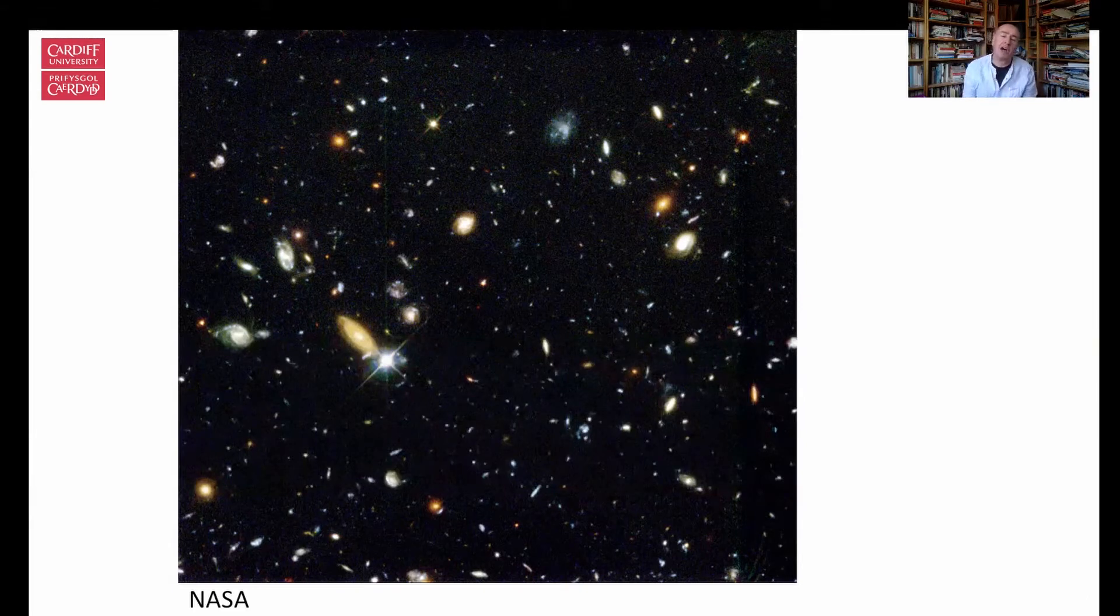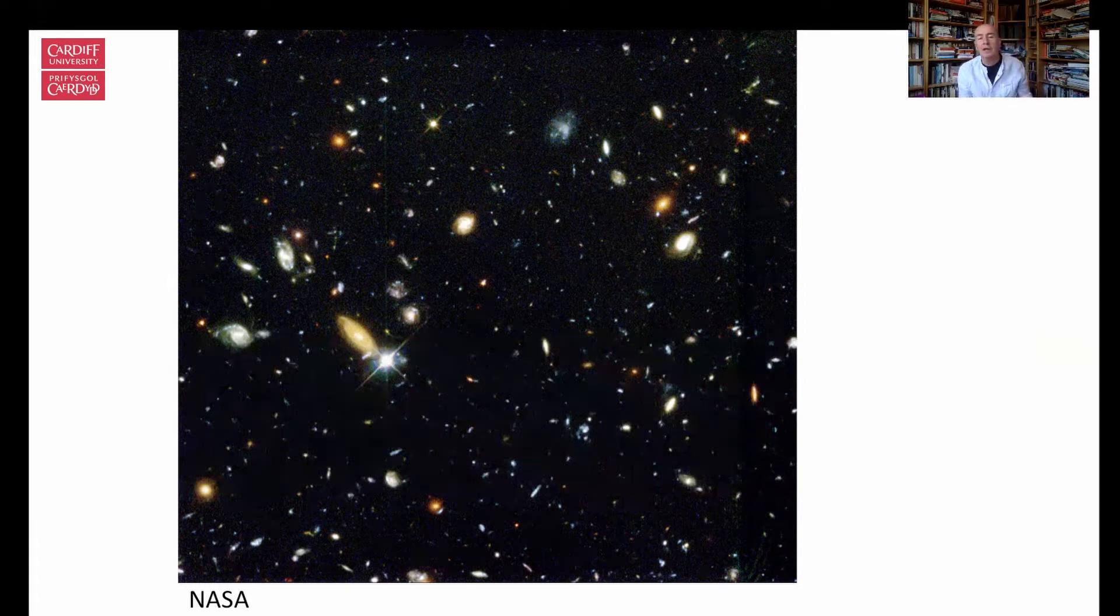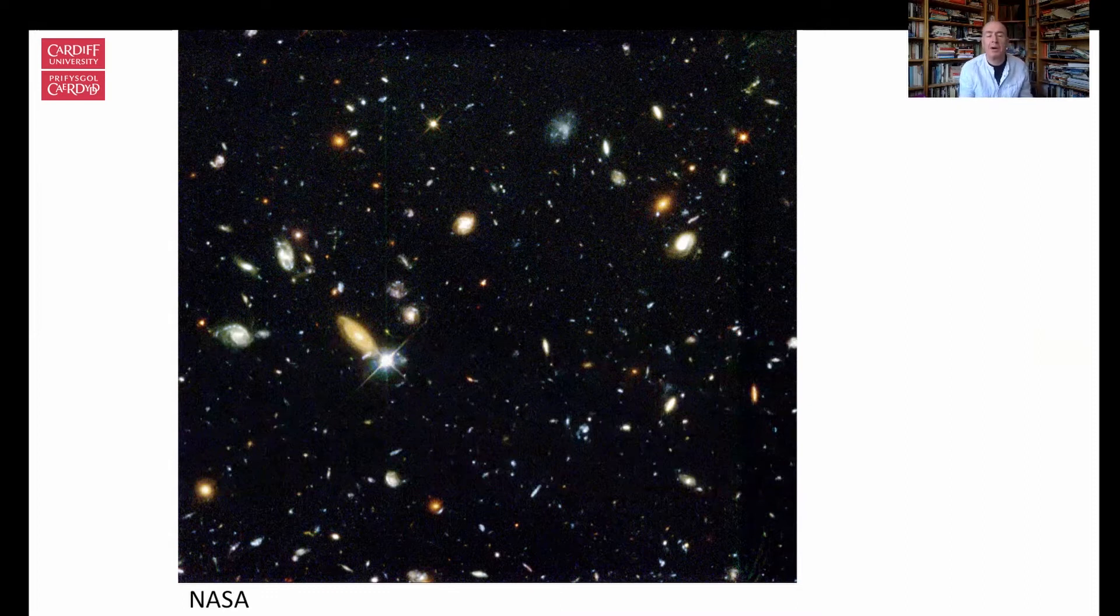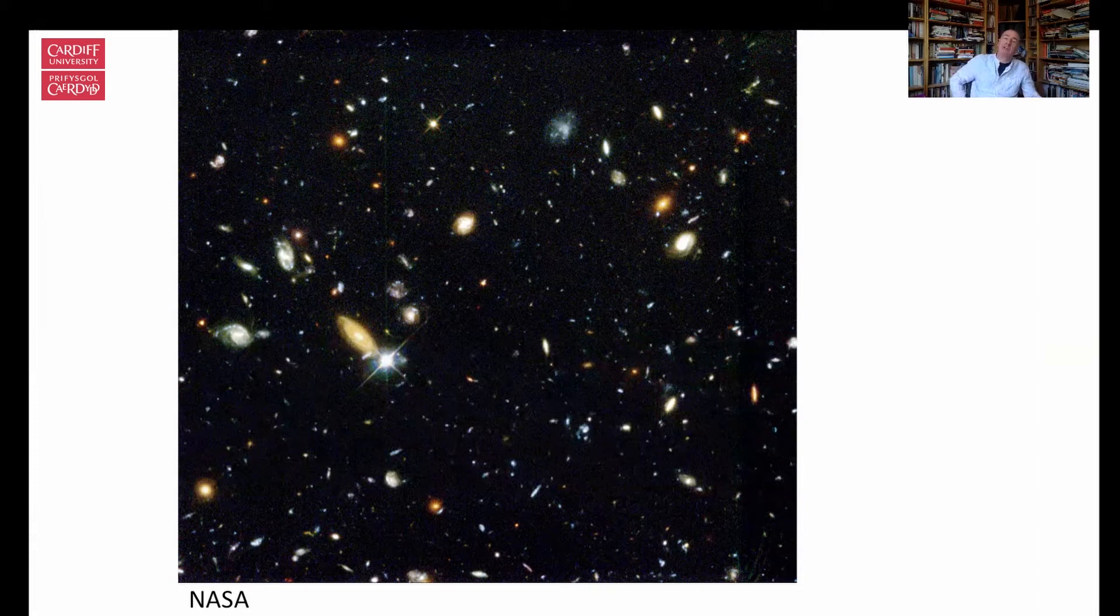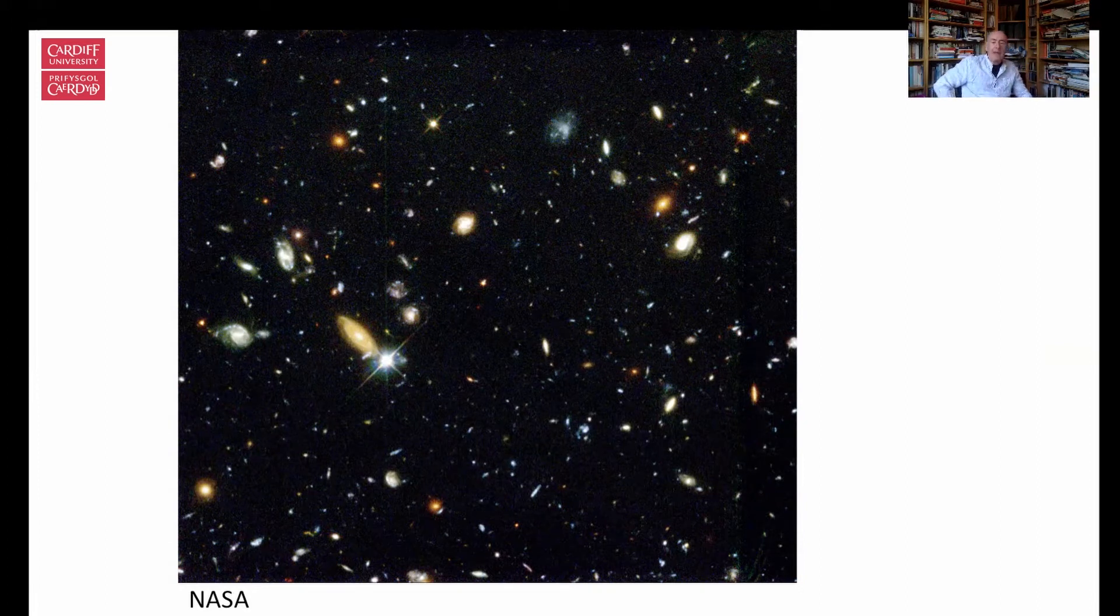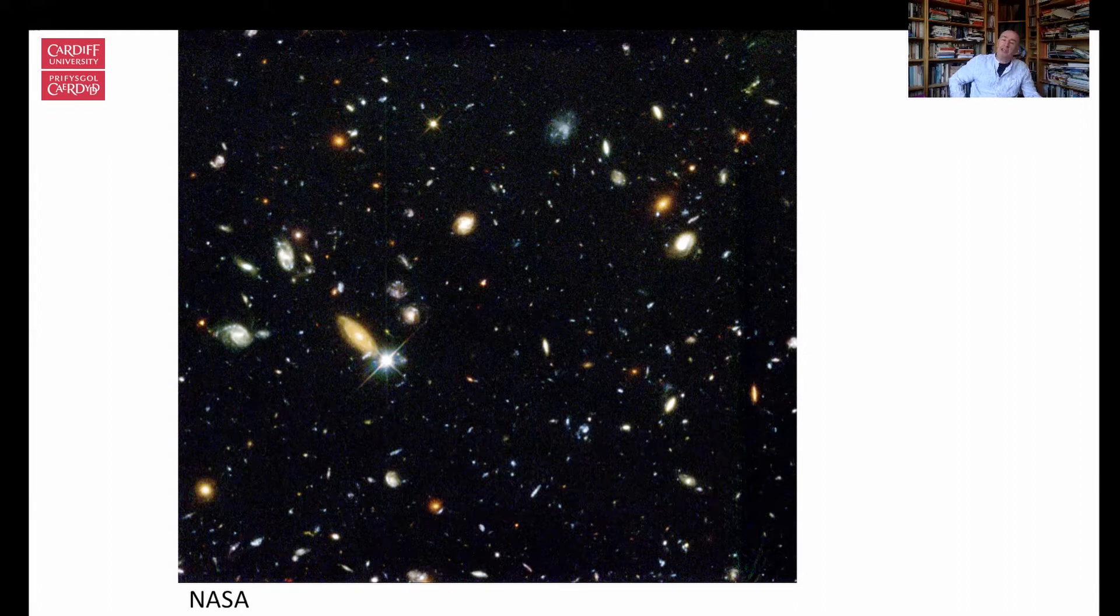The Hubble Deep Field is a tiny bit of sky but it contains about a thousand galaxies and this image actually illustrates some of the things I do in my life as an astronomer. There's roughly a thousand galaxies present in this image and some of the brighter galaxies are fairly close by but the more distant galaxies are so far away that light has been traveling to us for billions of years. And what that means is we're actually effectively looking back in time. Now about the most distant galaxy on the image is about 12 billion light years away which means that we're looking 12 billion years back in time.